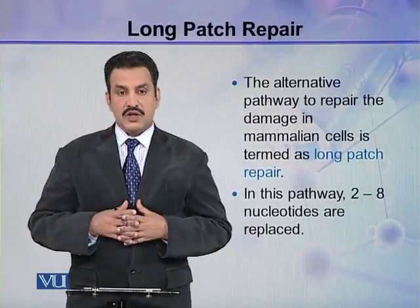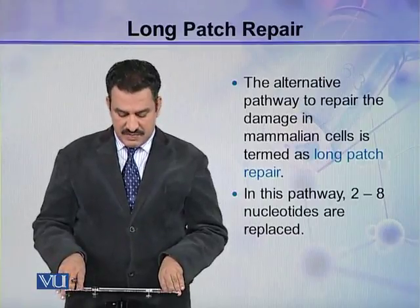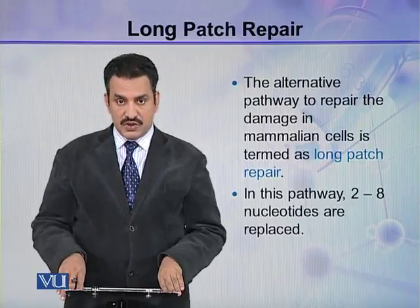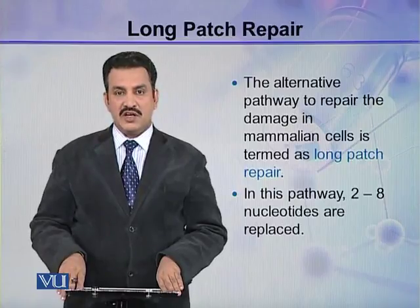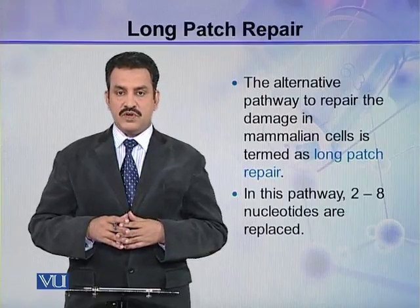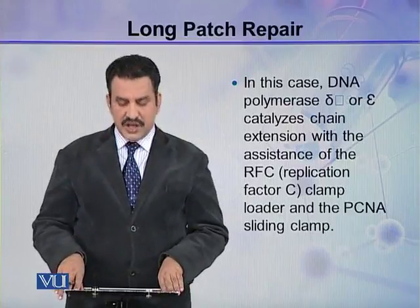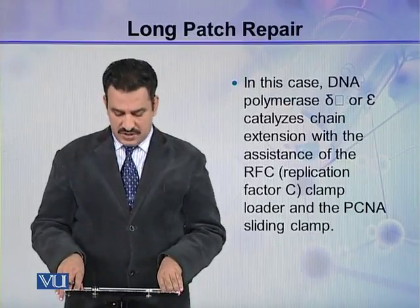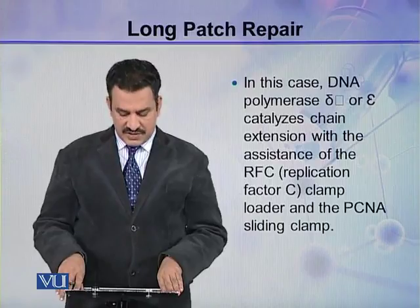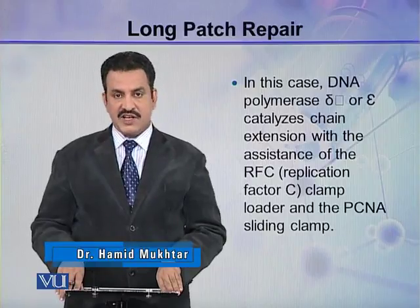Now comes the long patch repair. The alternative pathway to repair damage in mammalian cells is termed long patch repair. In this pathway, 2 to 8 nucleotides are replaced, in contrast to 1 nucleotide replaced in short patch repair. DNA polymerase delta or epsilon catalyzes chain extension with the assistance of RFC (replication factor C) clamp loader and the PCNA sliding clamp.